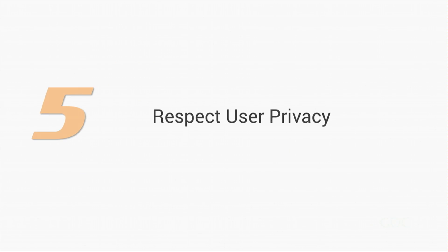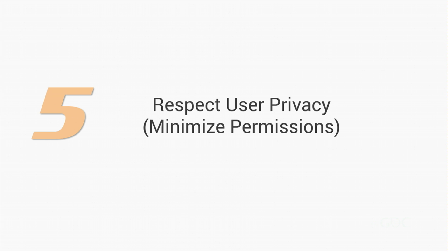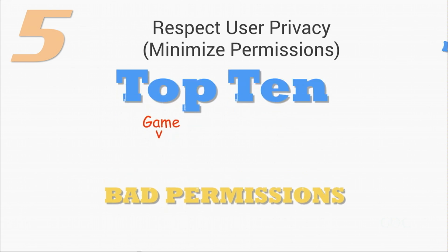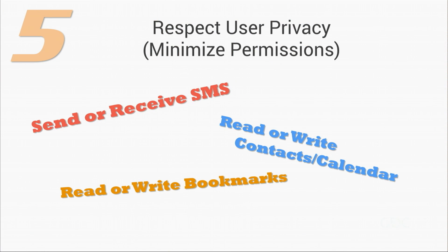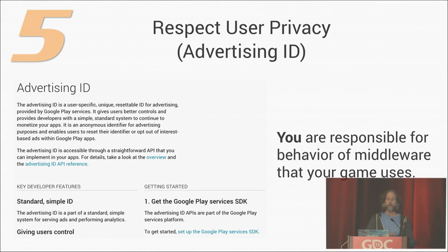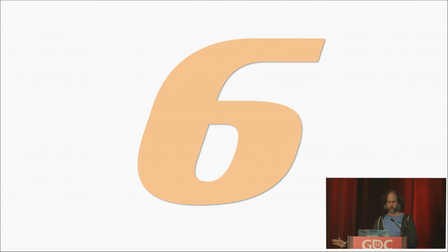Five: respect user privacy. What we mean here is minimize permissions. I used to talk about the top 10 bad game permissions — there's really no bad list, but if you're using anything like that, you probably don't have a good reason. And if your middleware requires it, you probably shouldn't be using that middleware. Make sure you understand when the advertising ID can and must be used. Remember that you are responsible for any middleware your game uses.